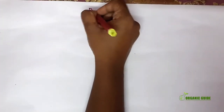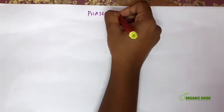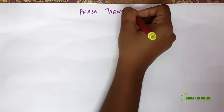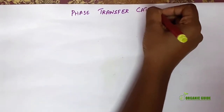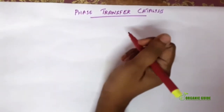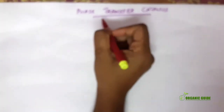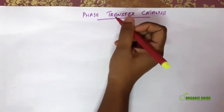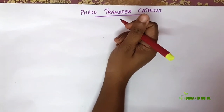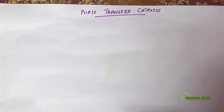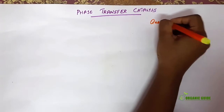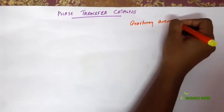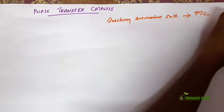Today we will discuss a new topic: phase transfer catalysis. This is a topic coming under substitution reactions. Phase transfer catalysis involves the passage or movement of immiscible reagents together by addition of some catalyst. Here we are using quaternary ammonium salts as the phase transfer catalyst.